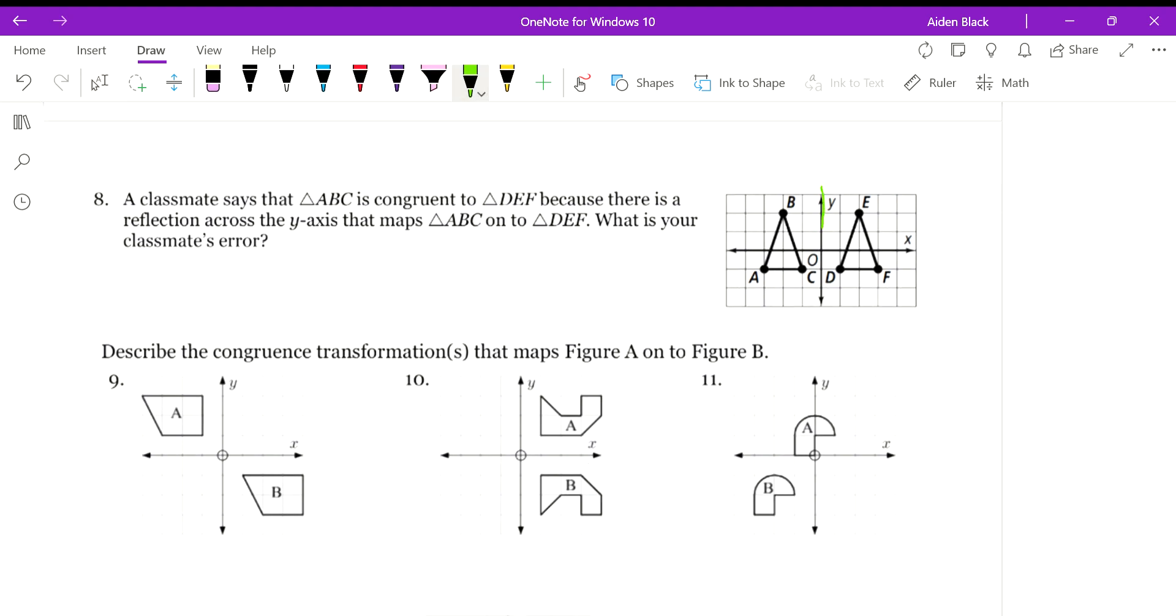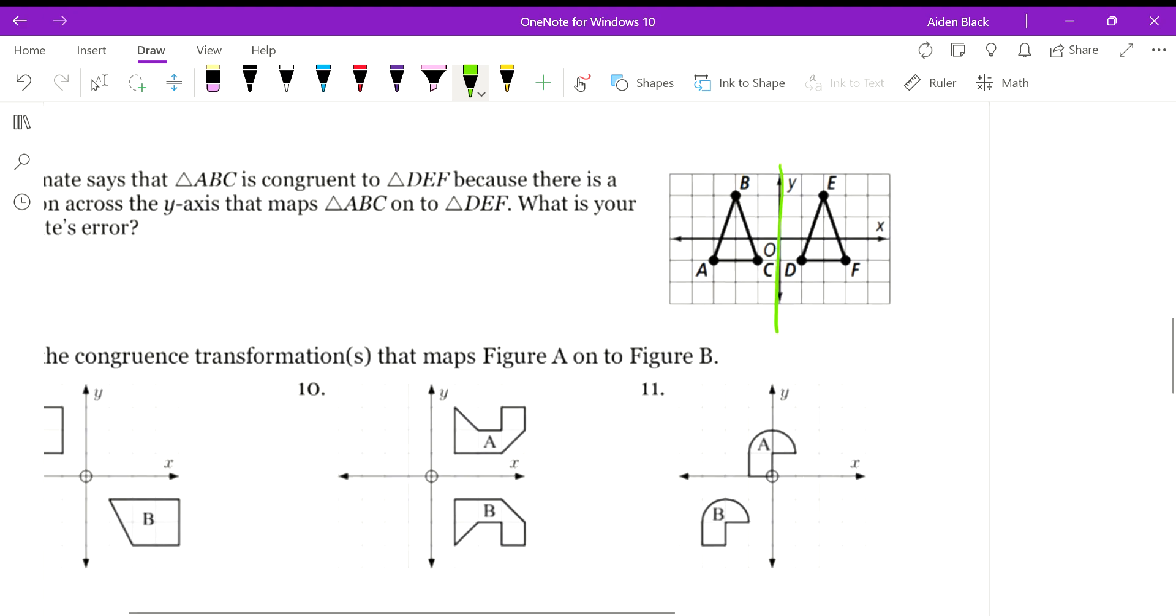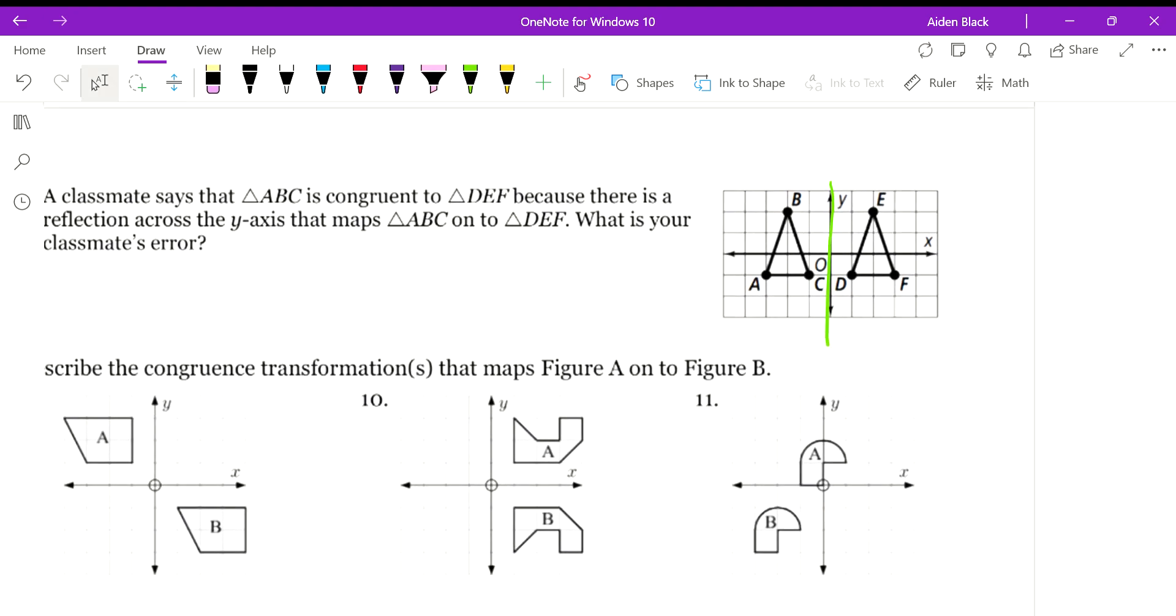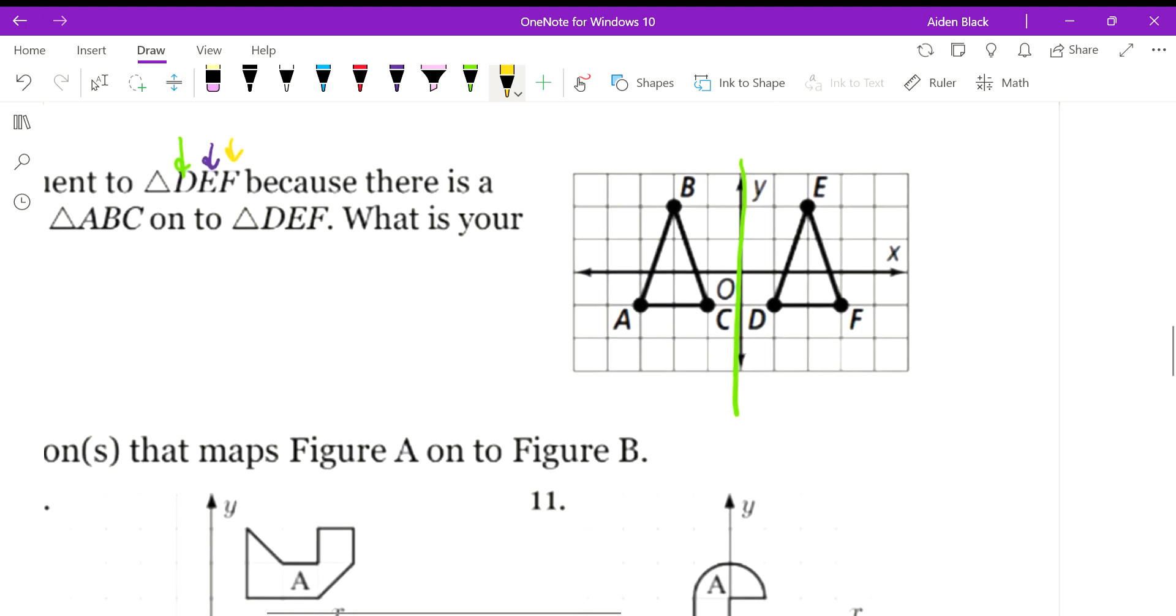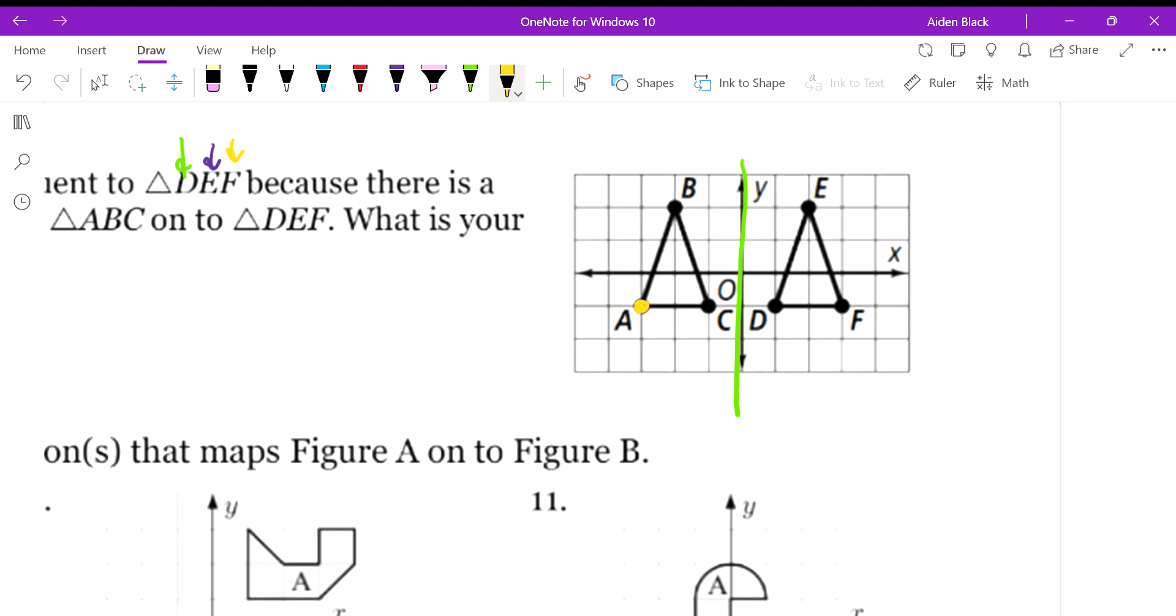So they're saying it reflects over the y-axis. Here's the y-axis. And look at the order. A goes with D, B goes with E, and then C goes with F. So let's make sure that if we're reflecting, this ends up correct. So if we're looking at a reflection, A, which is 3 units away from the y-axis, we need to go 3 units to the right.